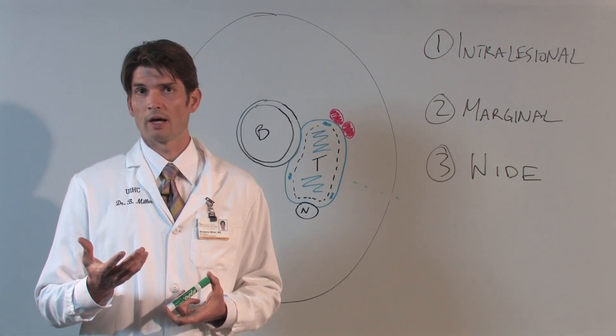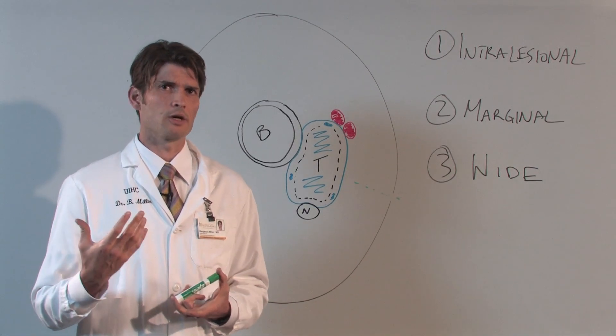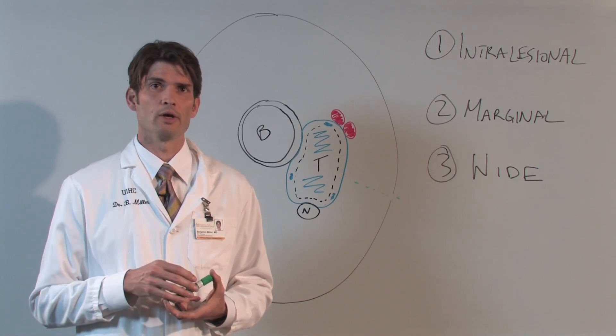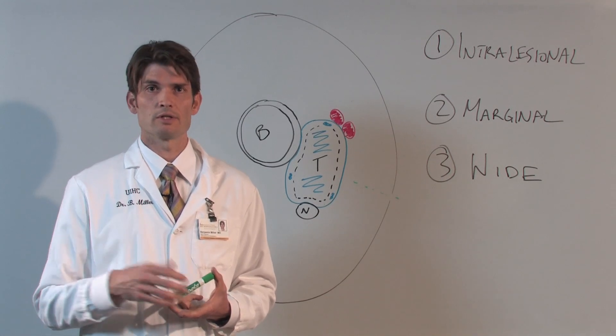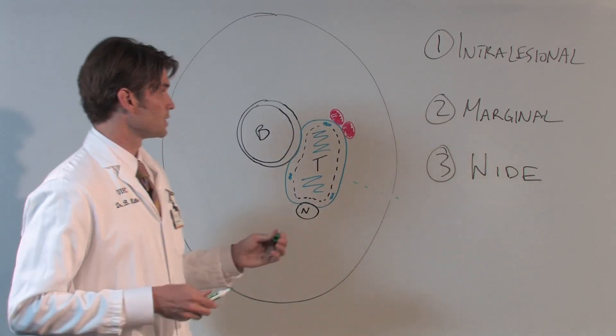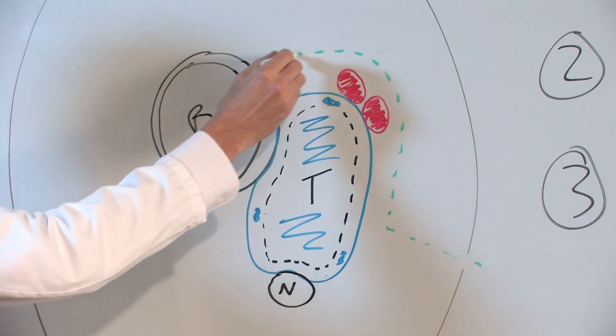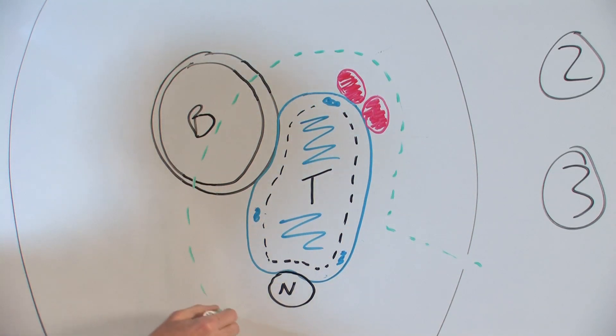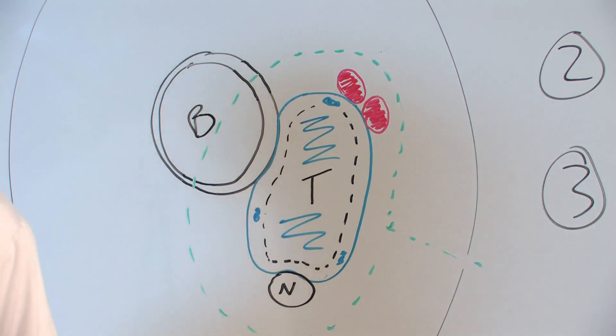The ideal margin that we would like to have is what's called a wide margin. And a wide margin implies that the entire tumor is taken out with an area of normal tissue, meaning that in the surgery itself you don't see any evidence of the tumor at all. On this diagram, what this would represent is taking out the tumor with a cuff of normal tissue. And not only would the tumor come out, but you can see some of these vital structures, such as the nerve, blood vessels, and part of the bone would also have to be removed.